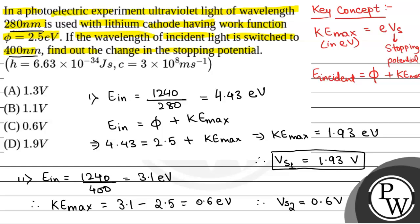Therefore, difference in the stopping potential delta V. Therefore, delta V will be equal to Vs1 minus Vs2 that is equal to 1.33 volts. So, the correct option will be option A, 1.3 volts.